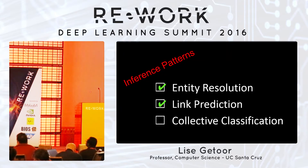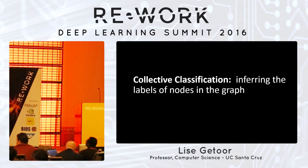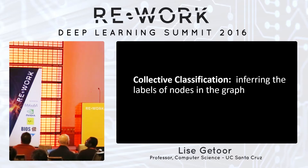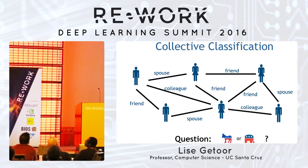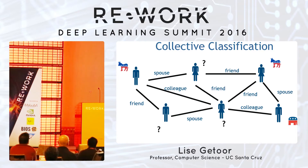The last micro pattern is collective classification — simply the idea of inferring labels for nodes in graphs. On a social network, I have a bunch of different kinds of relationships, and what I'm trying to do is label the nodes according to their political persuasion. Typically, you have some labels given — some observed labels — and then a set of unknowns that you're trying to jointly infer.